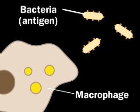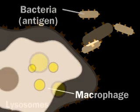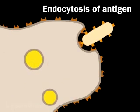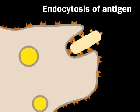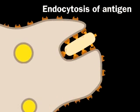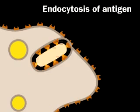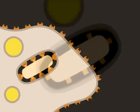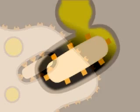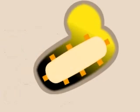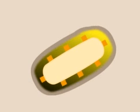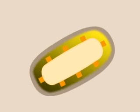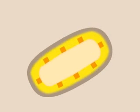The humeral immune response is initiated by a macrophage, which takes up an antigen, such as a bacterium or virus, and processes it. The macrophage engulfs the antigen in an endocytic vesicle and partially digests it.